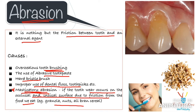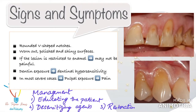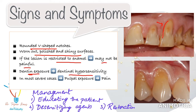Masticatory abrasion can also occur on the facial and lingual aspect of the teeth as coarse food is forced against these surfaces by the tongue, lips, and cheek during mastication. The signs and symptoms of dental abrasion include rounded, V-shaped notches on the cervical region, which are usually worn out, polished, and shiny. If the lesion is restricted to enamel, it may not be painful. However, if untreated, it can lead to dentine exposure, which will result in dentinal hypersensitivity. In severe cases, you may even find pulpal exposure, though it is not frequent.